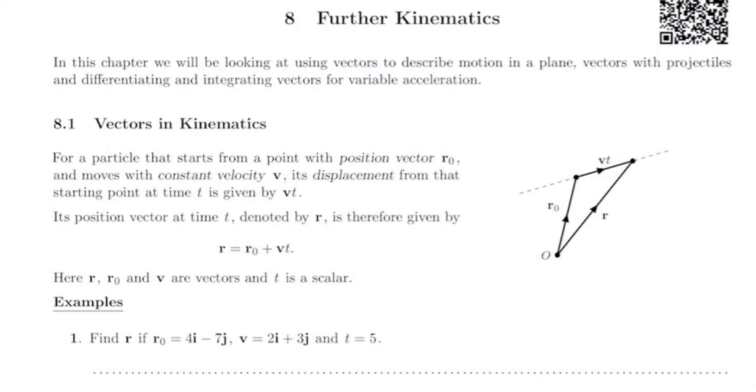If you see here, for a particle that starts from a point with position vector r₀ and moves with constant velocity v, its displacement from that starting point at time t is given by vt, velocity times time. Therefore its position vector at time t, denoted by r, is therefore given by r equals r₀ plus vt.